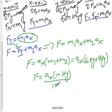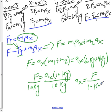We now add them together: we have F is ax times 10 kilograms. And if we solve this for a by dividing both sides by 10 kilograms, we find that our acceleration ax is equal to the applied force F divided by 10 kilograms.